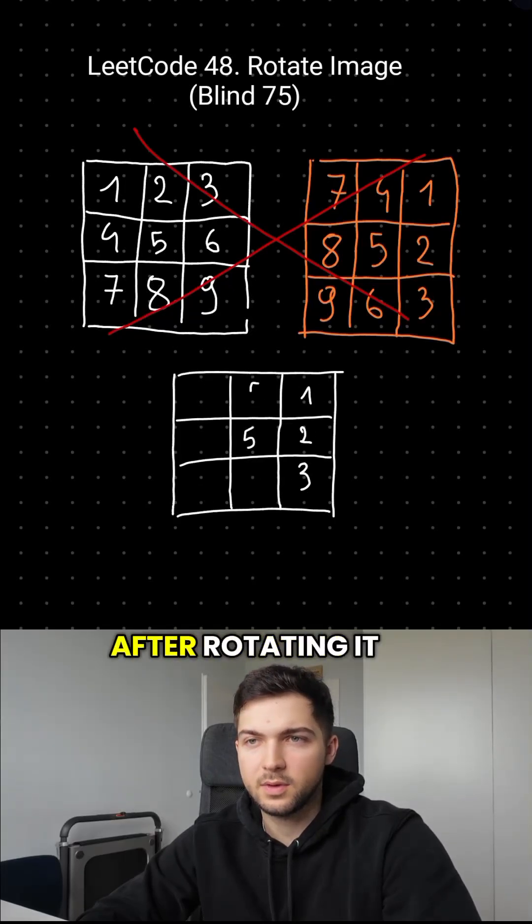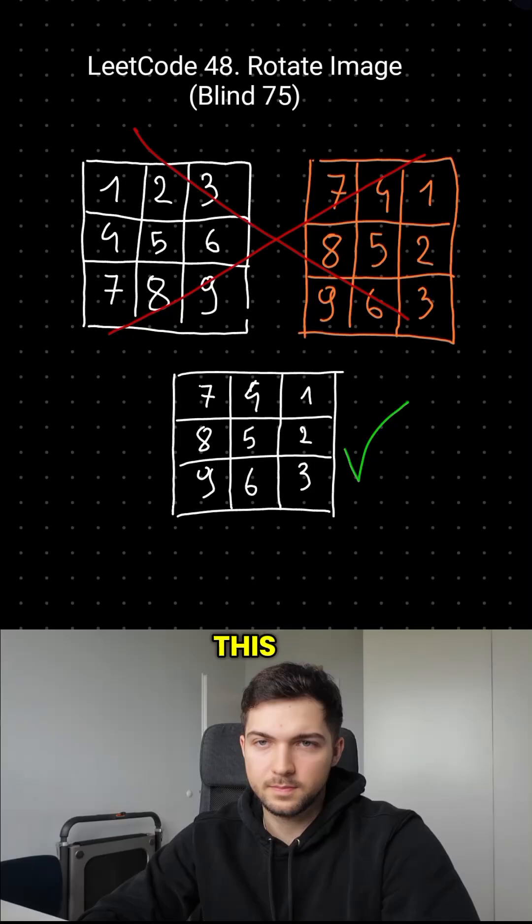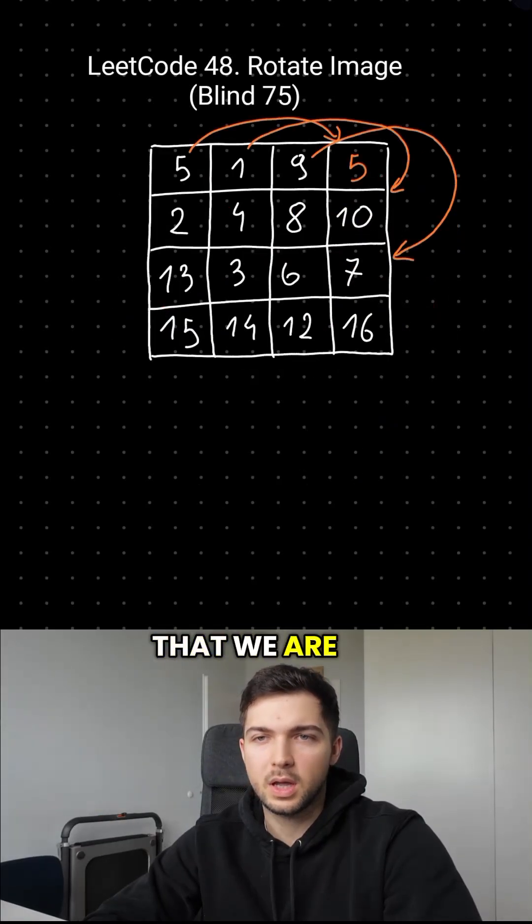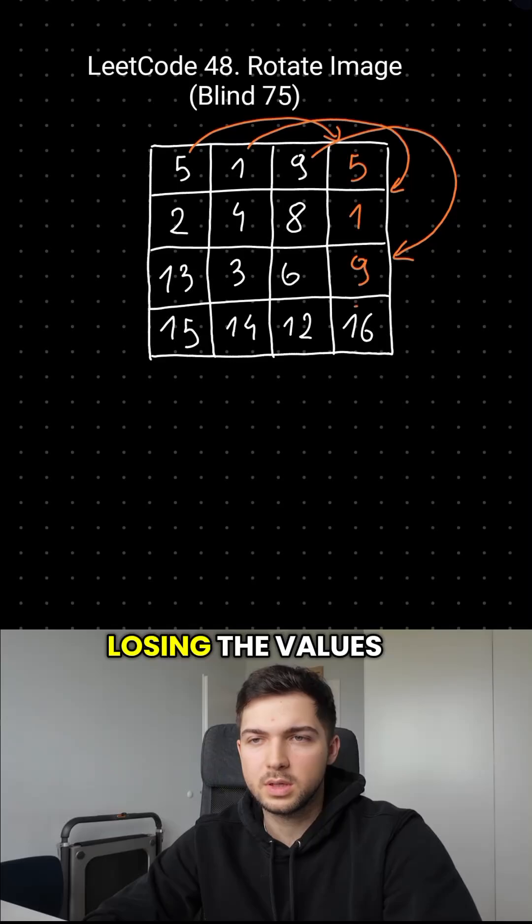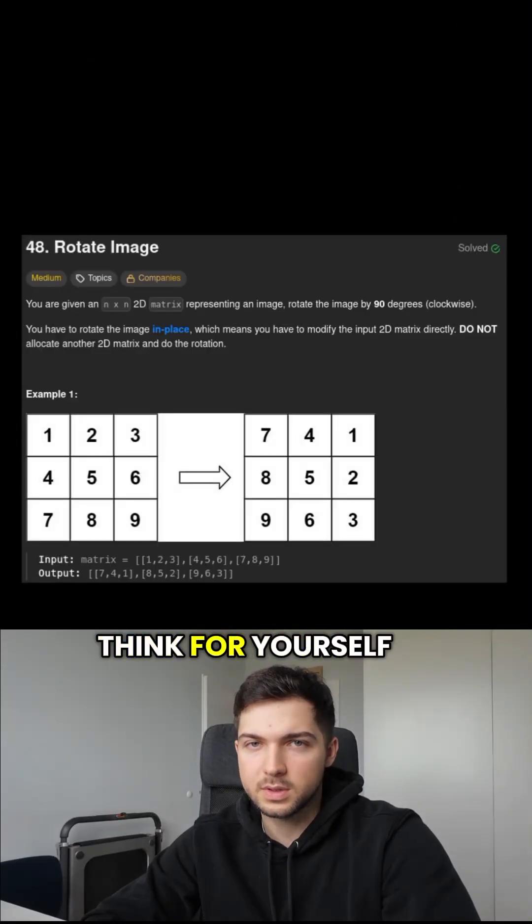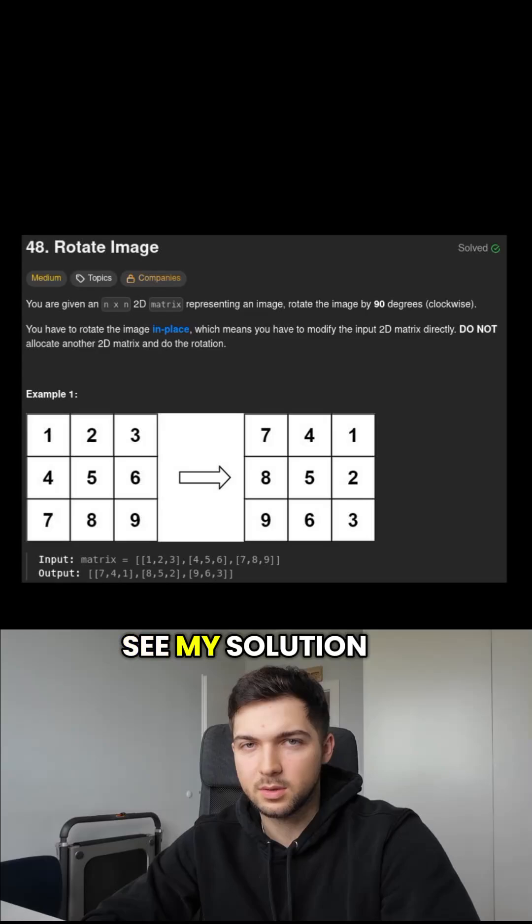Take a look at this matrix. After rotating, it would look like this. If we try to just move the elements one by one, we can notice that we are unable to do that because we are losing the values of the elements that we replace. You can pause and try to think for yourself and then play the video to see my solution.